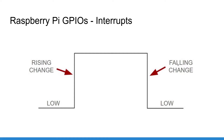If you have a push button where the signal is low by default and then you press and release, you're going to have first a rising and then a falling event. With another configuration using a pull-up resistor, the signal is high by default and low when you press the button. When you press, the falling event is triggered; when you release, the rising event is triggered. With interrupts, you are sure you are not going to miss this particular moment.